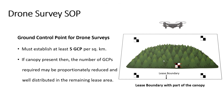This figure shows a leased boundary containing part of a canopy. Imagine this as a canopy covering 200 hectares within a leased boundary of 478 hectares. It is not possible to place GCPs in areas filled with dense canopies. So here, the GCPs are distributed well in the remaining parts of the leased boundary.